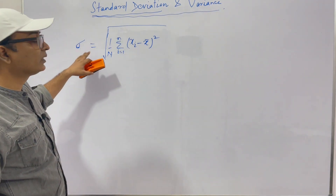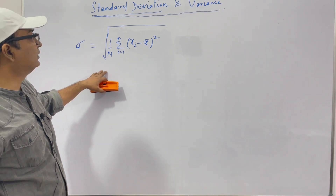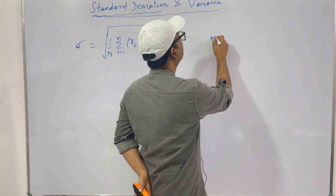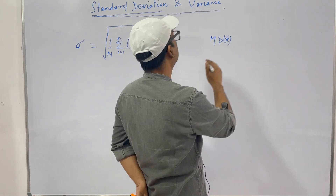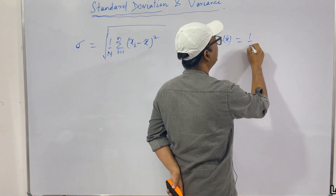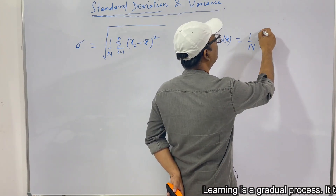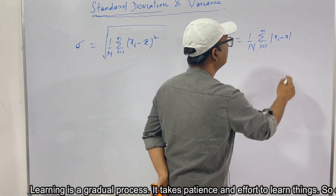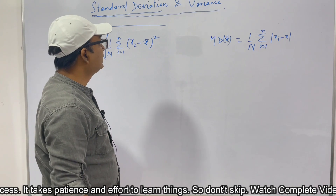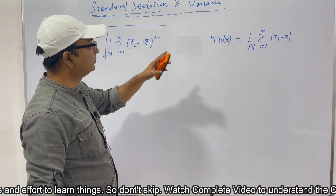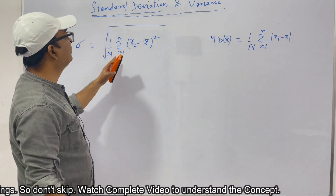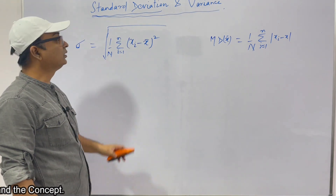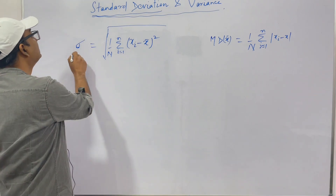If you compare this with mean deviation with respect to mean, mean deviation was (1/n) · Σ|xi − x̄|. So we have modified it — what we have done is taken the square and then taken the square root. This is the definition of standard deviation.